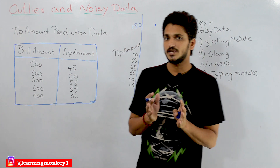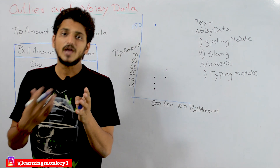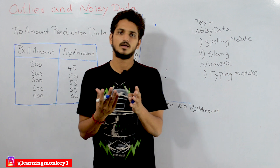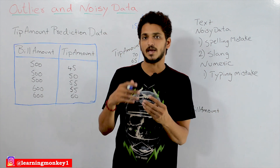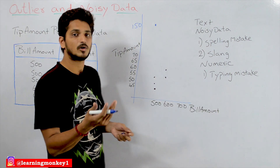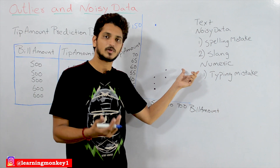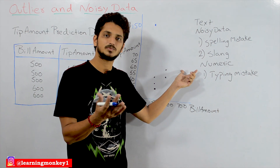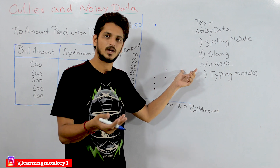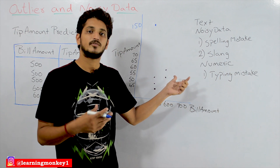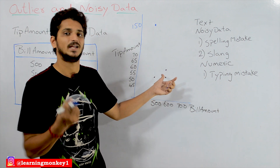So what is noisy data? Noisy data is wrong data. Why do we get wrong data? There are so many reasons. Because of typing mistakes, or because of network problems when we collect data from the internet — data corruption in datasets. Different reasons lead to wrong data, and this we call noisy data.